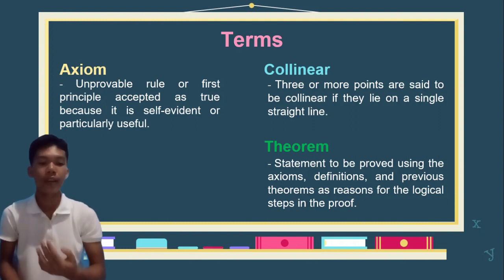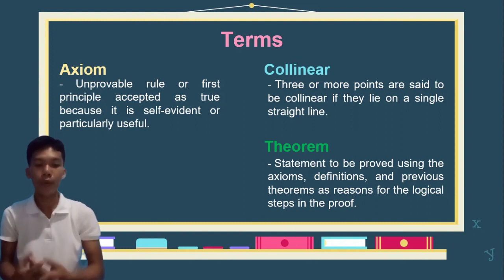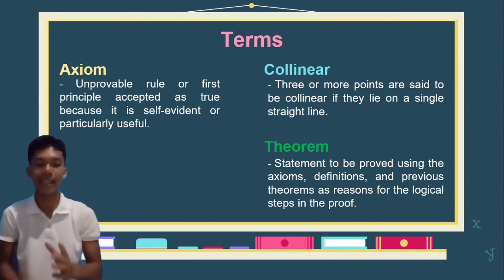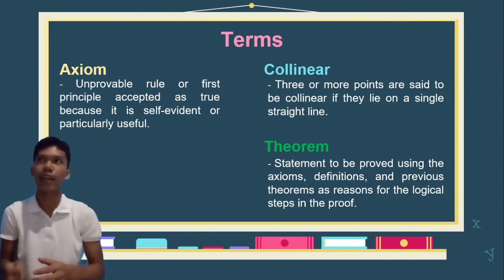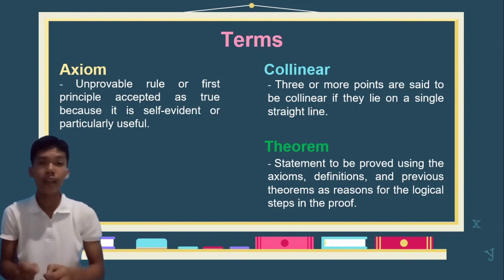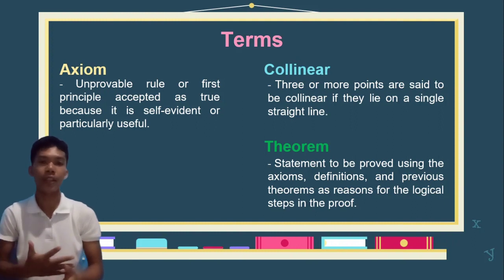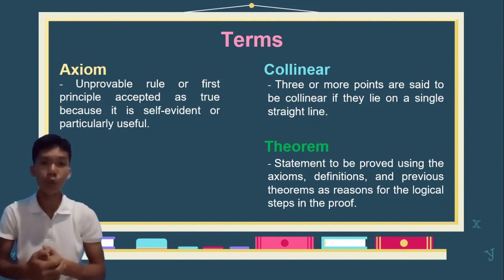Next is collinear. Three or more points are said to be collinear if they lie on a single straight line. For example, if there are points A, B, C lying on a single line, then they would be collinear. That is an example of it.